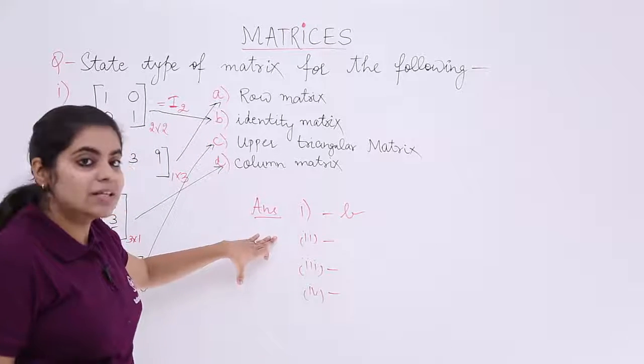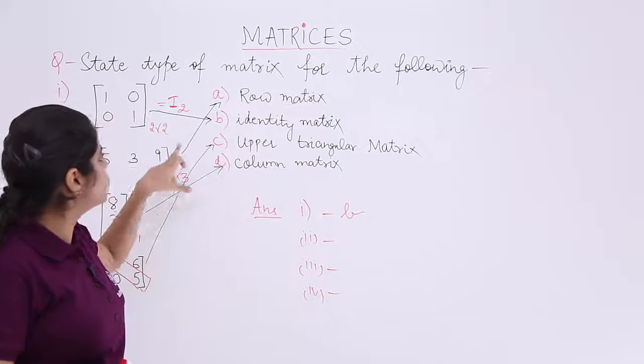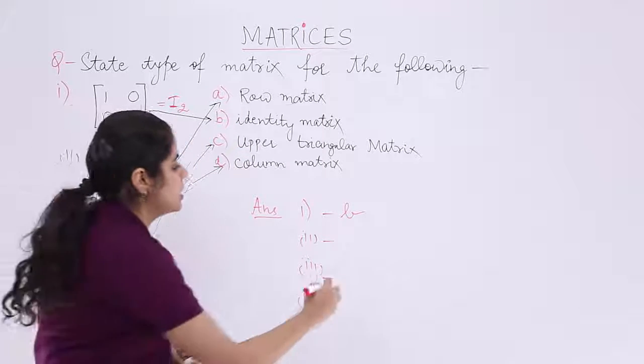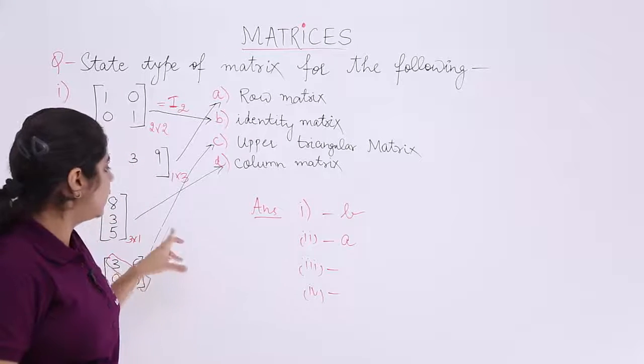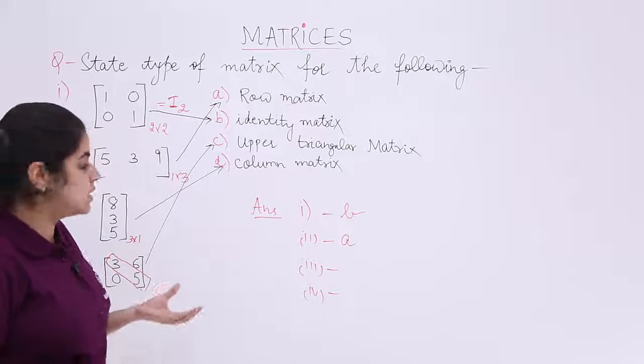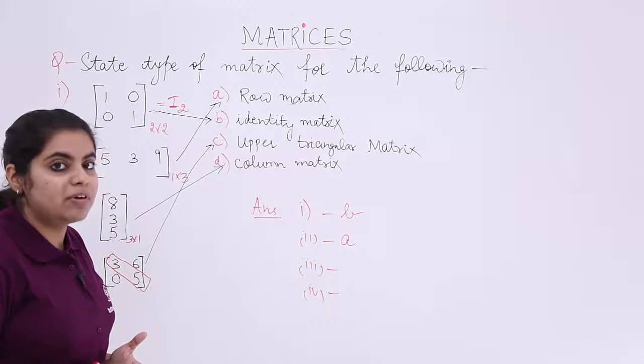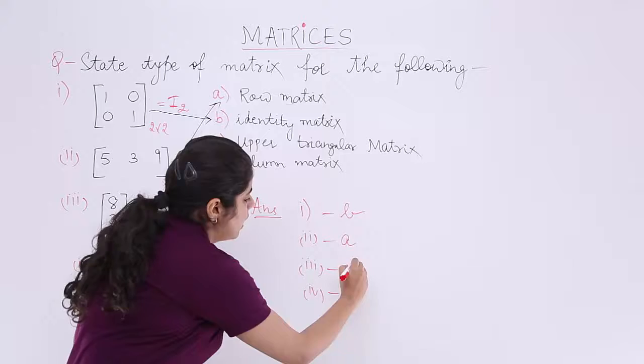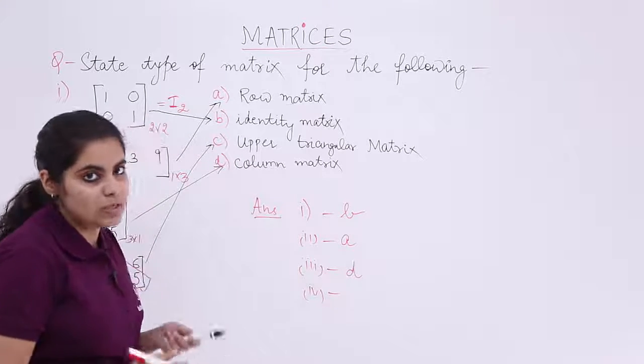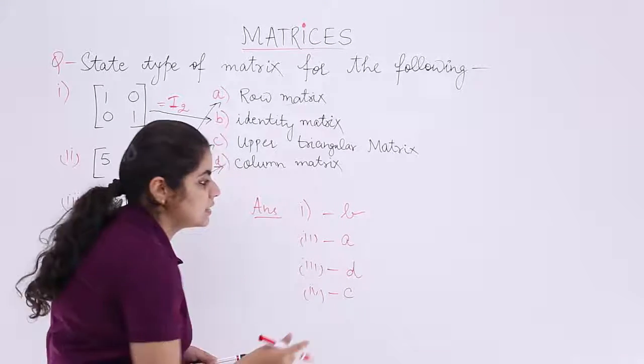Part number 2 answer was what? Let's see. Part number 2 was row matrix which was A. So, I write here A. Part number 3 was what? It was a single column. You see here [8; 3; 5] is there. And [8; 3; 5] is what? A single column which is nothing but the column matrix.